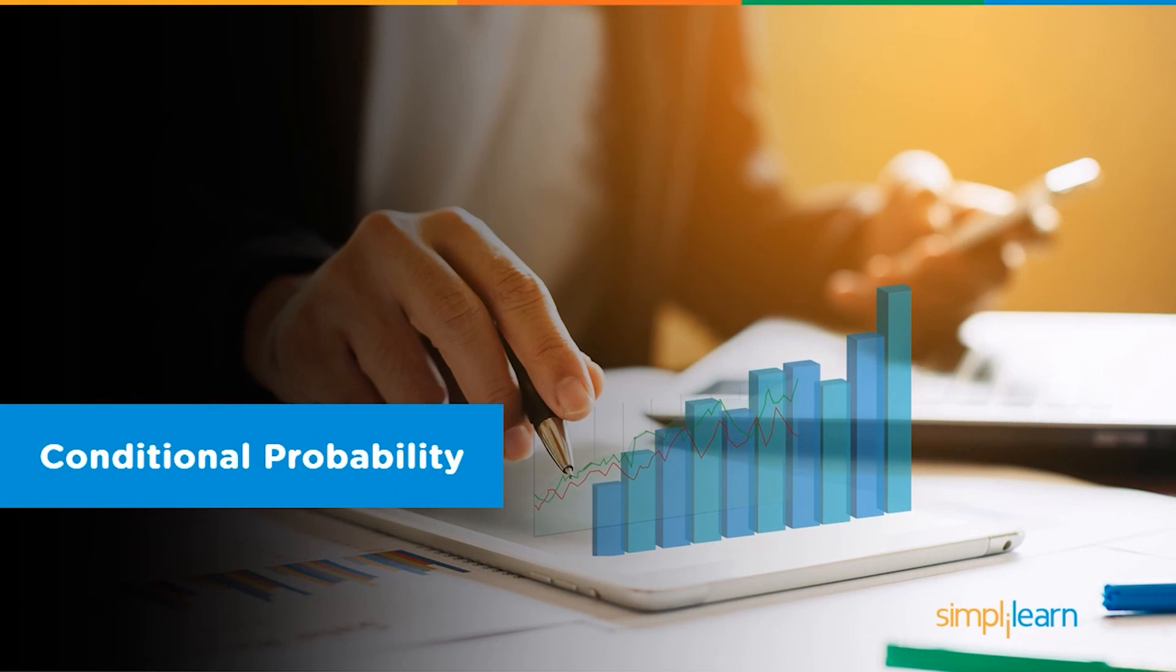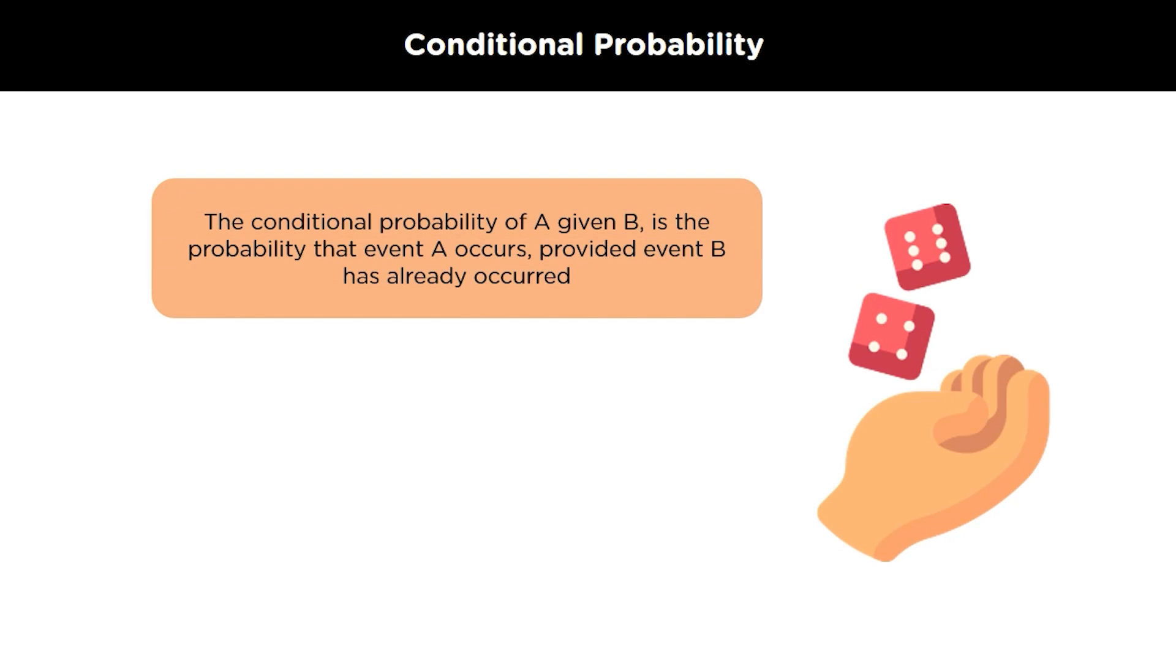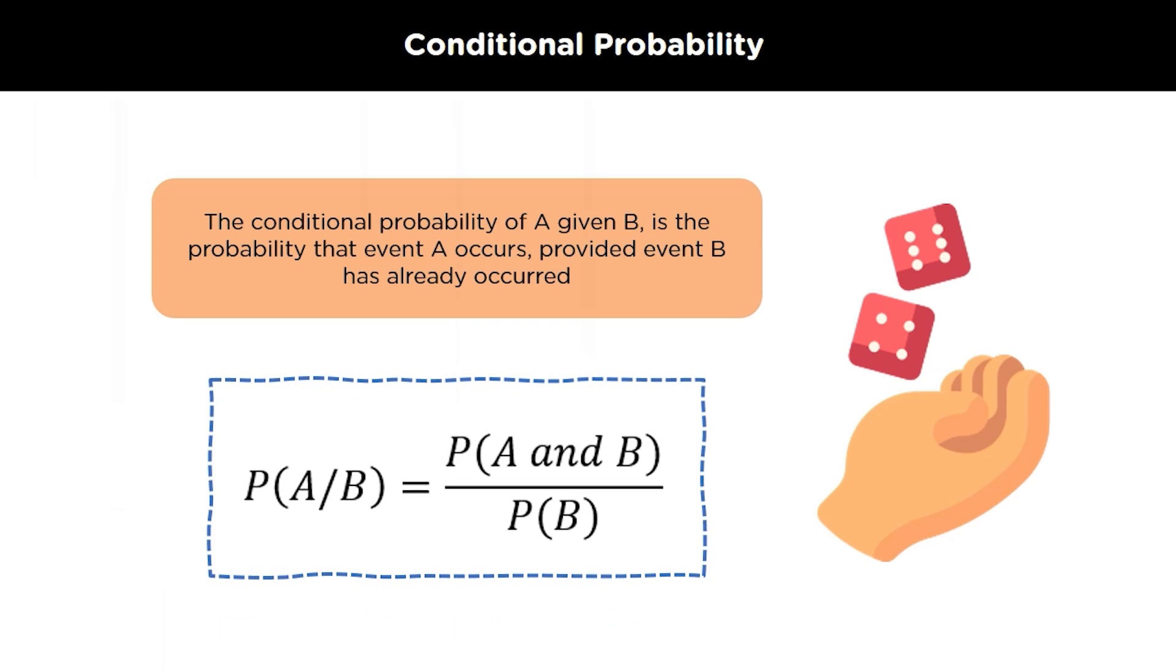Now let's move on to conditional probability. Let A and B be the two events associated with a random experiment. Then, the probability of A's occurrence under the condition that B has already occurred and the probability of B is not equal to 0 is called the conditional probability. It is denoted by P A slash B. Thus, we can say that P A slash B is equal to P A intersection B divided by P of B, where P A slash B is the probability of occurrence of A given that B has already occurred and P B is the probability of occurrence of B.